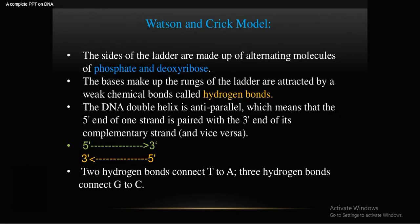In the Watson and Crick model, the sides of the ladder are made up of alternating molecules of phosphate and deoxyribose. The bases forming the rungs of the ladder are attracted by weak chemical bonds known as hydrogen bonds.